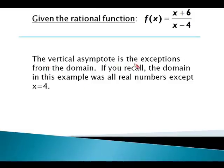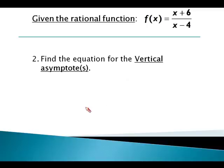So again, the vertical asymptote is the exceptions from the domain. So remember the domain of this rational function was all real numbers except x equals 4. Well, that x equals 4 happens to be our vertical asymptote. So back to our question: Find the vertical asymptote. X equals 4 is our answer.